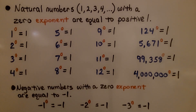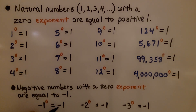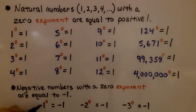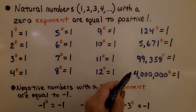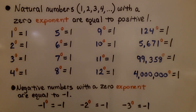Negative numbers with a zero exponent are equal to negative 1. If we have negative 1 to the zero power, it's equal to negative 1. Just as positive numbers with a zero exponent equal positive 1, if we have a negative number with a zero exponent, it's equal to negative 1. So negative 2 to the zero power is negative 1, negative 3 to the zero power is negative 1, and negative 4 million to the zero power would be negative 1.